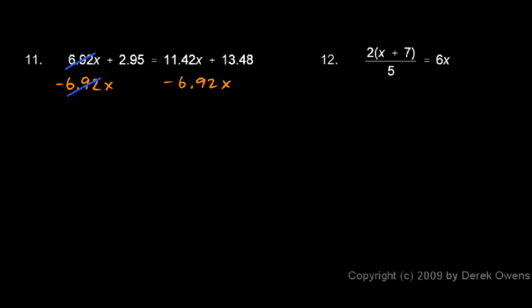When I do that, the 6.92x on the left and the negative 6.92x go away, cancel each other out, leaving me with just the 2.95. On the right, 11.42x minus 6.92x works out to 4.5x, and I still have this plus 13.48.